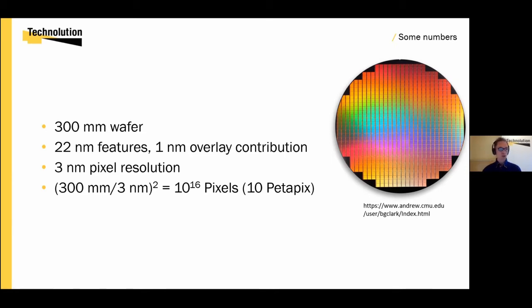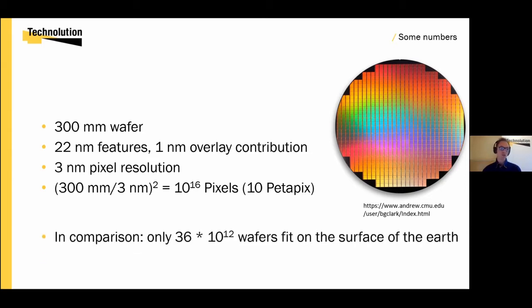To put this into perspective, on the surface of the earth, which is 510 million square kilometers, we can only fit 36 trillion wafers. So, if you make a wafer out of each pixel, we would have to stack these 200 thick when spreading them out over the entire earth.